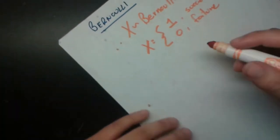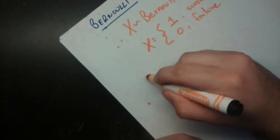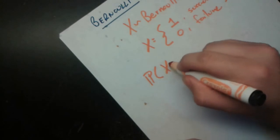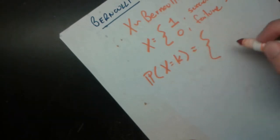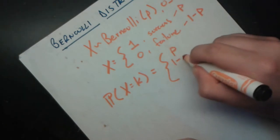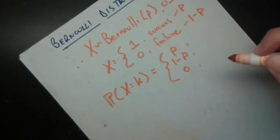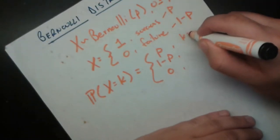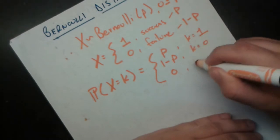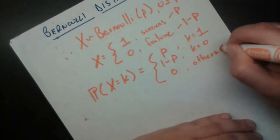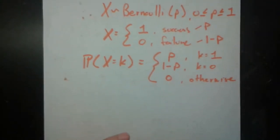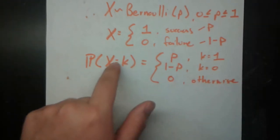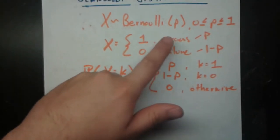Now let's talk about the probability mass function, PMF, of this random variable. We say that the probability — using blackboard boldface P — that x equals k, which is some real number, is equal to one of three things: p, 1 minus p, or 0. Specifically, the probability that x equals k is p if k equals 1, 1 minus p if k equals 0, and 0 otherwise. The probability that x equals 1 is p, since x is only equal to 1 if we have a success, which happens with probability p.